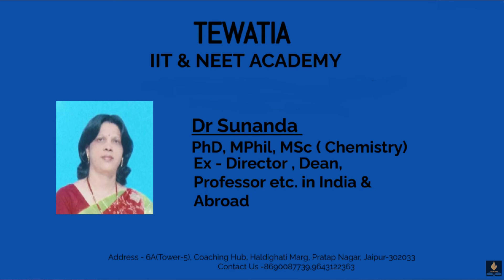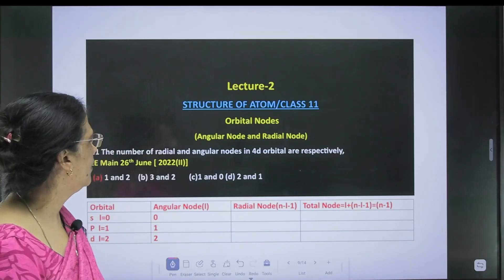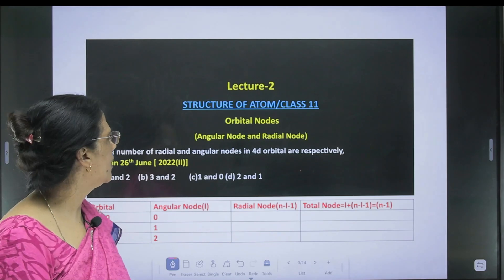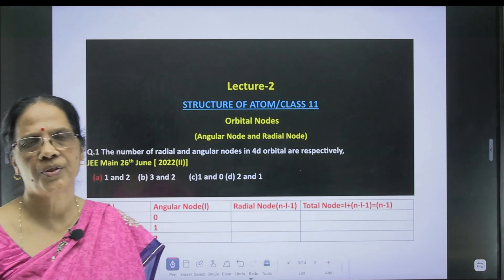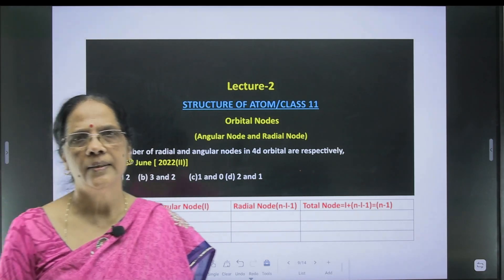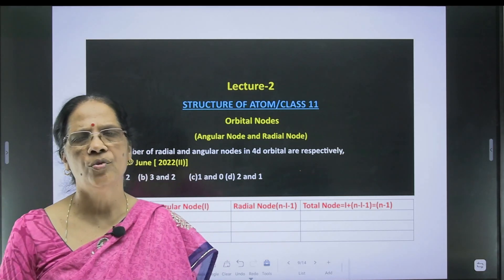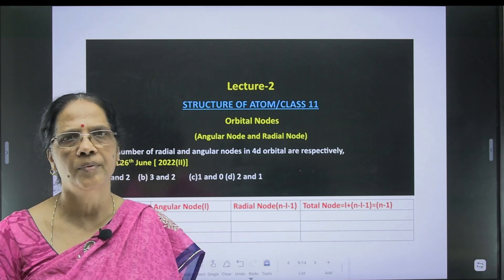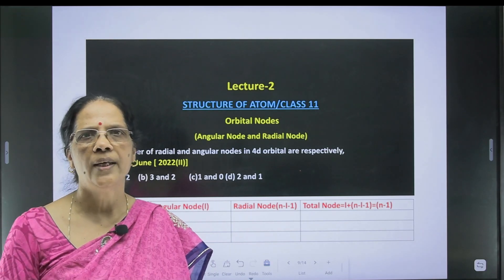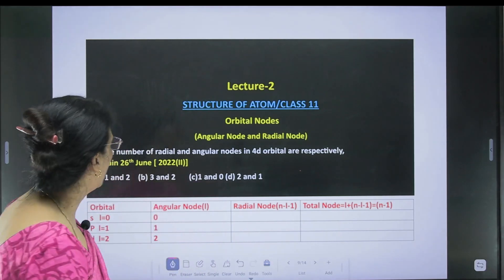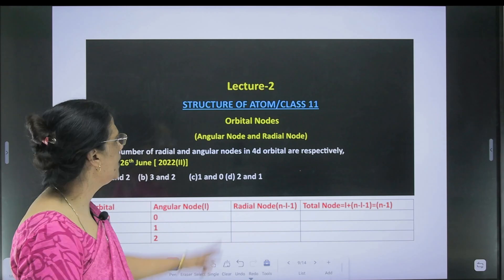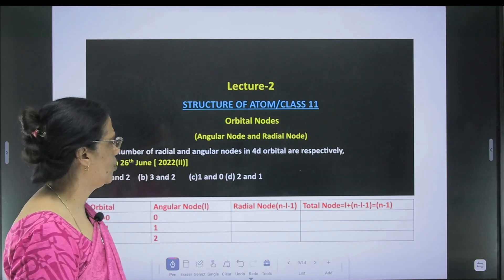Today I am going to discuss the structure of the atom, where I will discuss some numericals based on orbital nodes. There are two types of orbital nodes: one is angular nodes and the other is radial nodes.